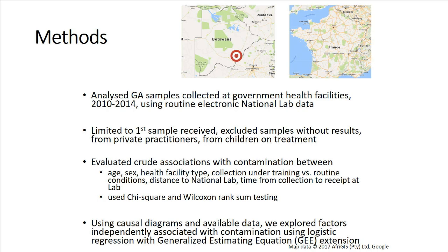We analysed samples from 2010 to 2014 using routine electronic data from the national TB lab. We limited our analysis to the first sample received, even though some children had two and occasionally three samples. We excluded the small number of samples collected from private practitioners and those taken from children who were on treatment. We evaluated crude associations with contamination, looking at demographic variables, distance variables, and how far was the site from the lab.